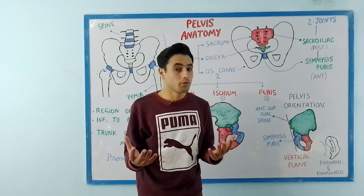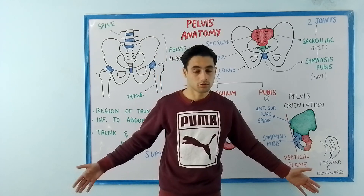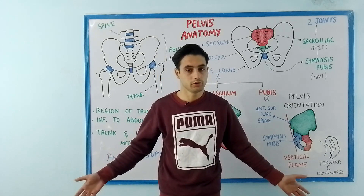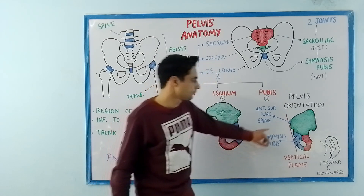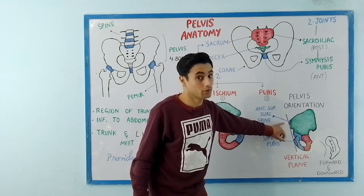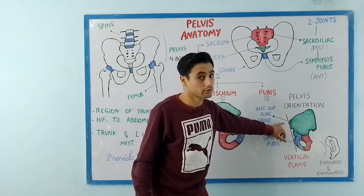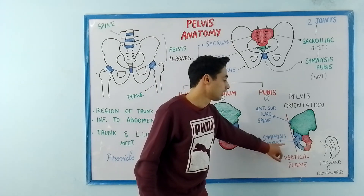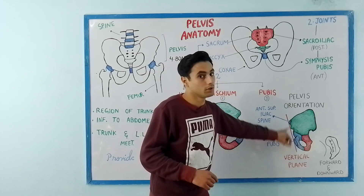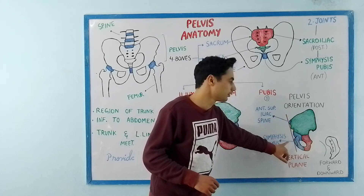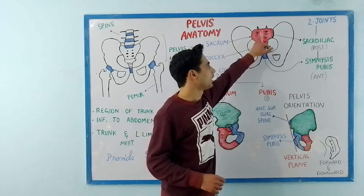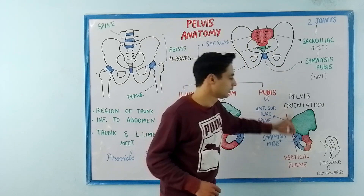Now, how is the pelvic cavity oriented in our body in anatomical position — the normal position? Have a look: the front part of the anterior superior iliac spine and the symphysis pubis are in the same vertical line.